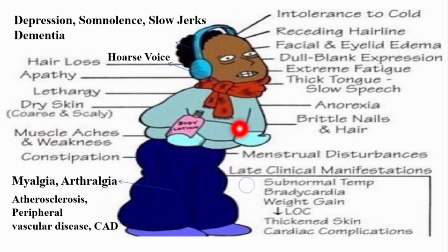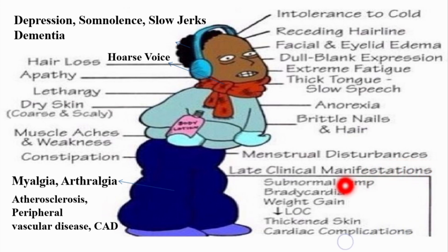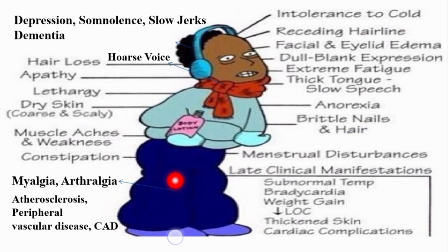There is coarse and scaly skin. In females there are menstrual disturbances like polymenorrhea or menorrhagia. Late clinical manifestations include subnormal temperature, decreased heart rate or bradycardia, weight gain, thickened skin, and certain cardiac complications. Cardiac complications usually arise due to an increase in cholesterol level, because thyroid hormone is a cholesterol-lowering hormone. When thyroid hormone levels are decreased, cholesterol rises and causes atherosclerosis, followed by peripheral vascular disease and coronary artery disease.